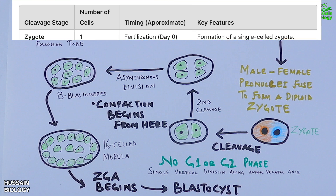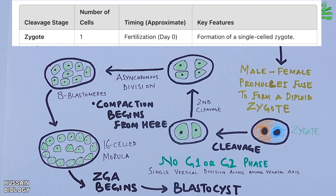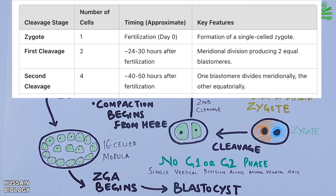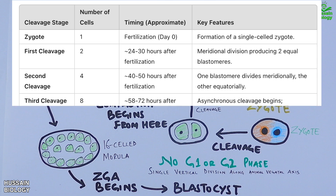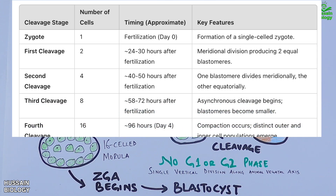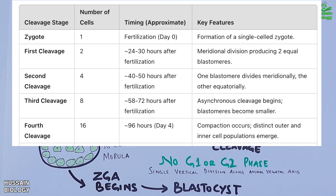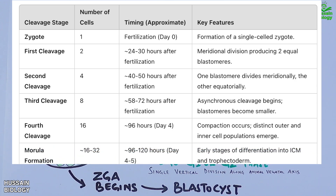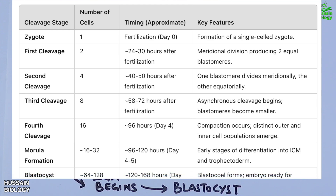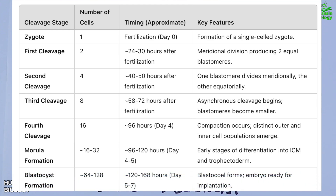Regarding the timeline in humans: the zygote is day zero; the first cleavage occurs 24 to 30 hours after fertilization; the second cleavage is 40 to 50 hours after fertilization; the third cleavage is 58 to 72 hours; the fourth cleavage is at 96 hours, which is day four; morula formation is 96 to 120 hours, that's day four to five; and blastocyst formation is five to seven days.